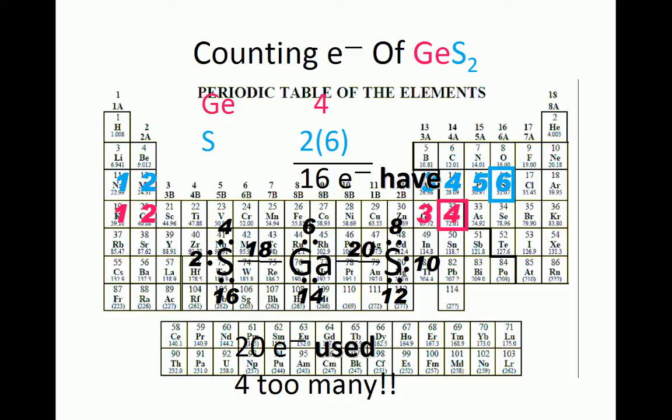To conserve electrons, we will make one double bond for every two electrons we are short. Therefore, we will make two double bonds, one to each sulfur, and erase a lone pair from both germanium and sulfur when we do so for each double bond.